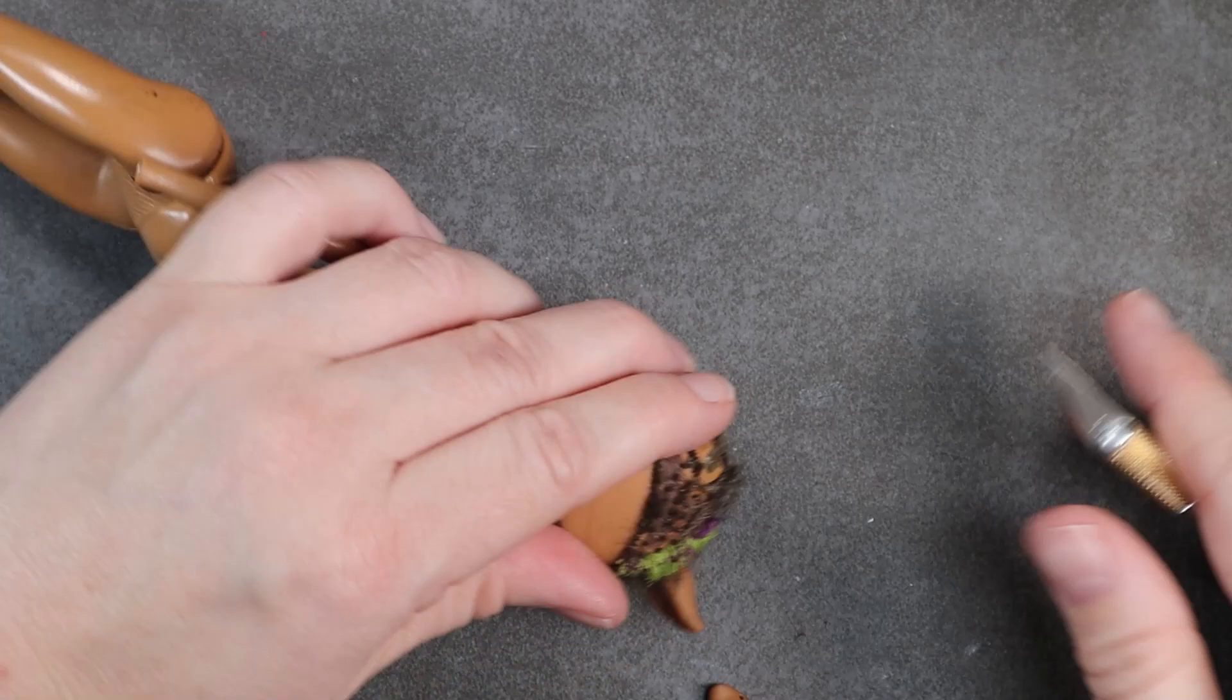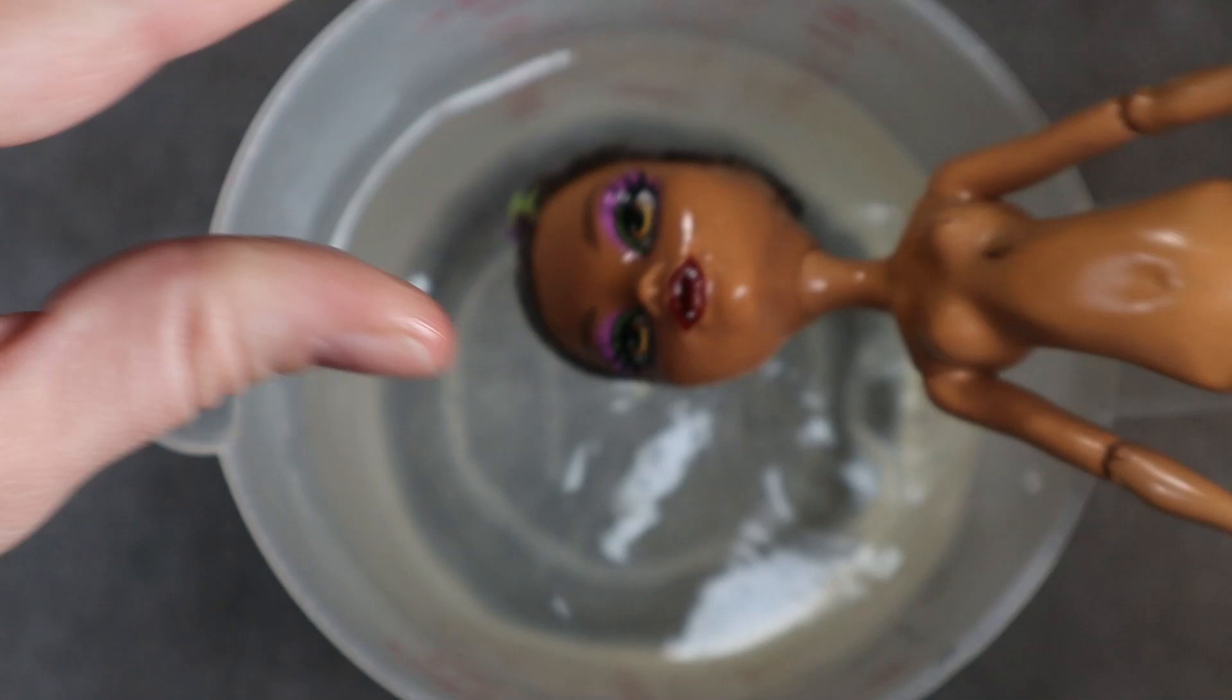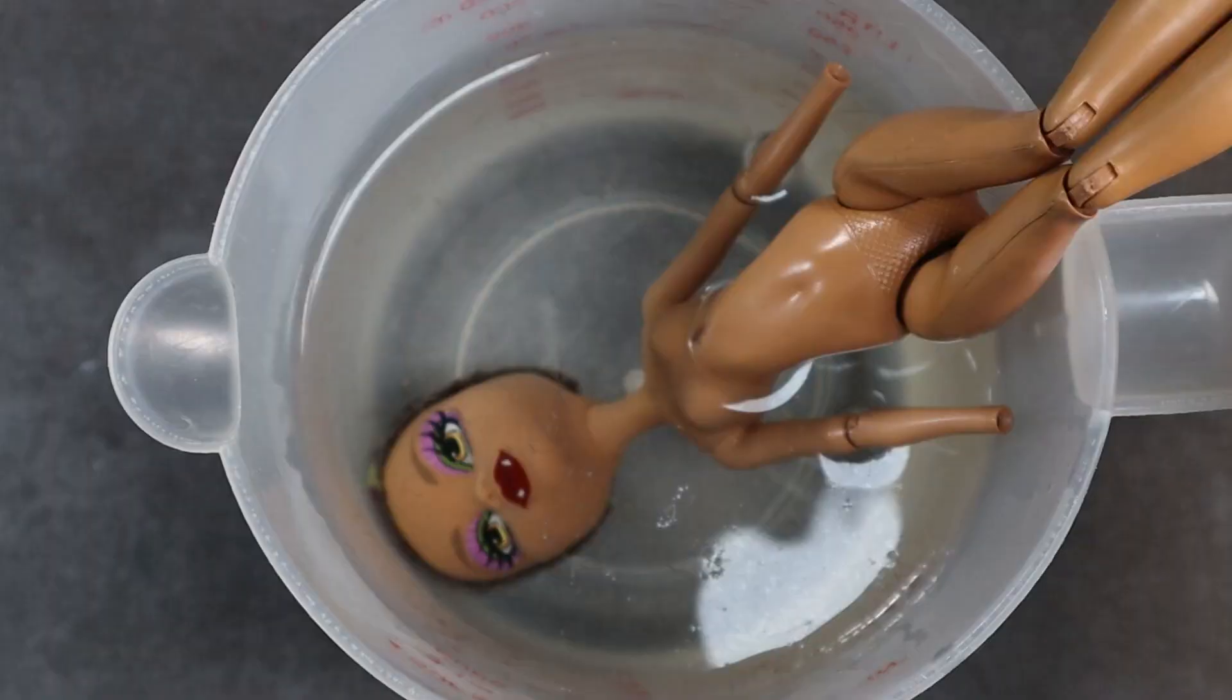For this project I chose a Claudine Wolf doll and I prepped her just like normal, but this time around I did not need her wolf ears so I chopped those off. I then popped her into a cup of hot water until the vinyl was soft enough to remove her head.